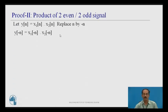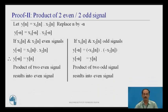Proof 2: Product of two even and two odd signals. Let y(n) = x₁(n) × x₂(n). Replace n by -n: y(-n) = x₁(-n) × x₂(-n). If x₁(n) and x₂(n) are even signals, then y(-n) = x₁(n) × x₂(n) = y(n), so the product of two even signals results in an even signal. Similarly, if both are odd signals, x₁(-n) = -x₁(n) and x₂(-n) = -x₂(n), so their product gives y(-n) = x₁(n) × x₂(n) = y(n), and the product of two odd signals also results in an even signal.